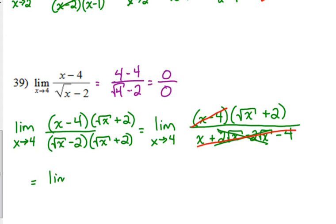So this simplifies down to the limit as x approaches 4 of our function is just the square root of x plus 2 now. And now we can plug in 4 and we don't have an issue. The square root of 4 plus 2, which is 2 plus 2, which is indeed 4.